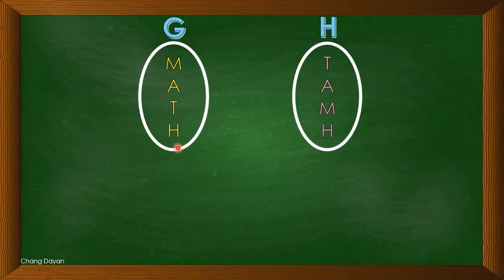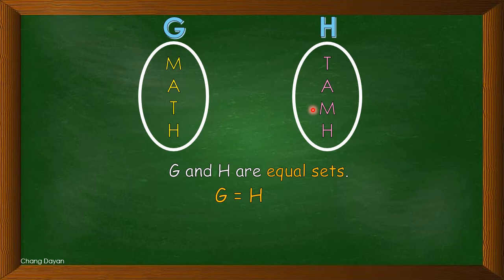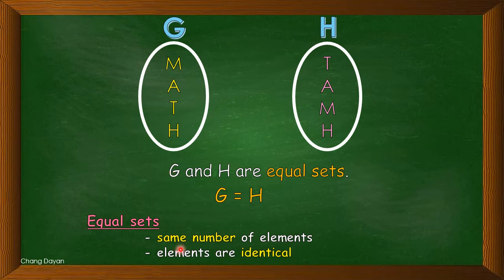Now let's consider set G with the elements M, A, T, H and set H with the elements D, A, H. We consider these as equal sets because they have the same number of elements and those elements are identical. We can find M in set G, same with set H; we can see A in set G, same with H; and T, H as well. Equal sets have the same number of elements and they are identical.